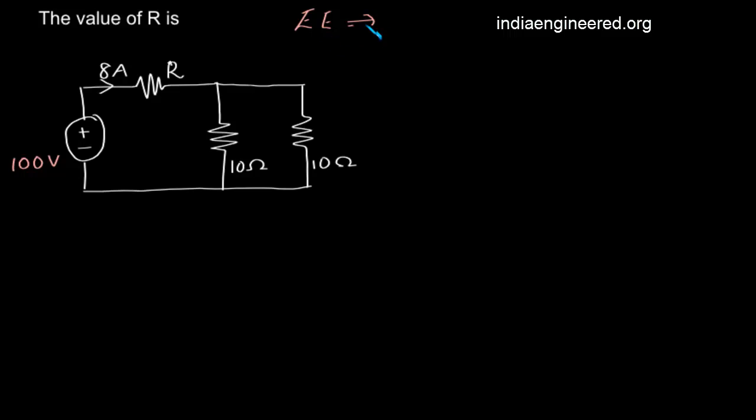This is an electrical 2005 question. We are asked to find out what is the value of this resistance R. Now we will simplify the circuit a bit further. We have 10 ohm and 10 ohm in parallel.